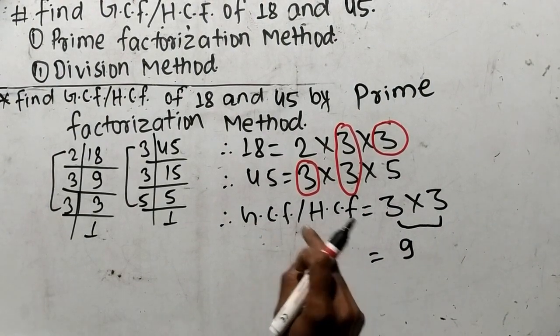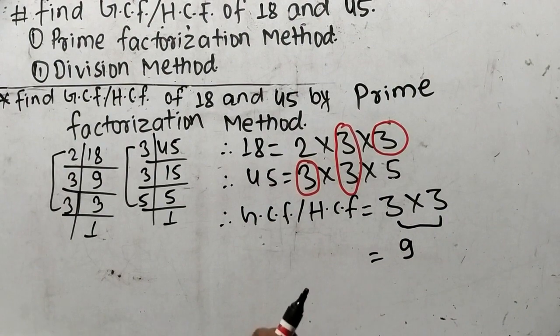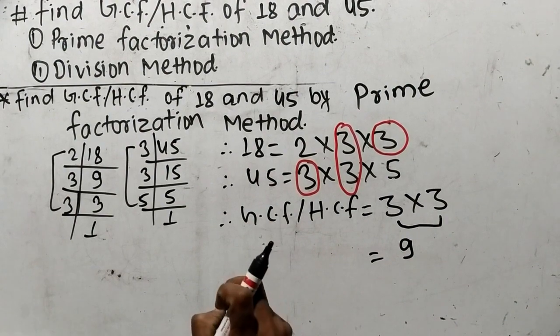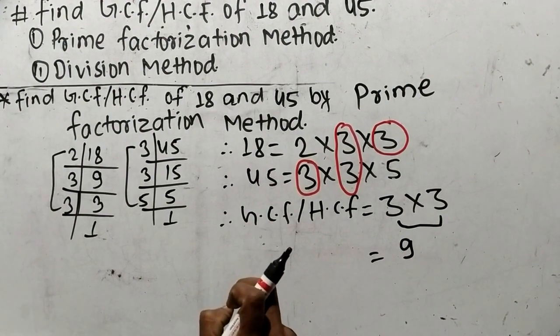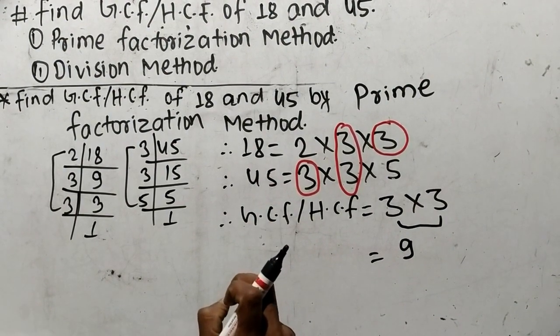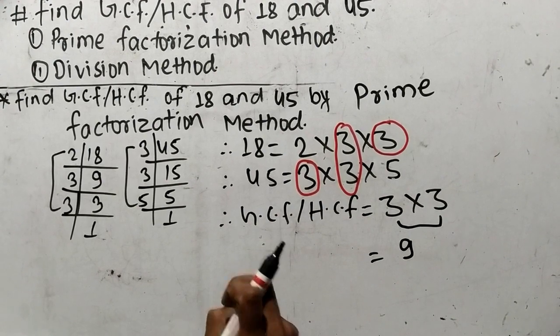So 9 is the GCF or HCF of 18 and 45. In this way we can find out GCF or HCF by prime factorization method.